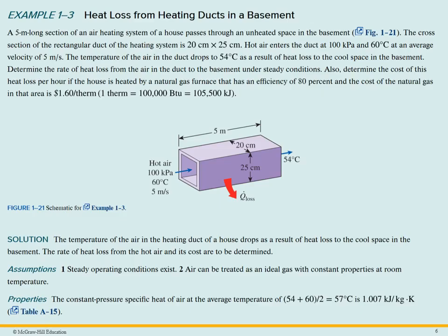Let's take a look at example 1.3. Here we have heat loss from a duct. So we have a five meter long section of air heating system. It's 20 centimeters wide and 25 centimeters deep. We have hot air coming in at a hundred kilopascals at 60 degrees C, five meters per second coming in and going out at 54 degrees C. So it's heat loss, right? It comes in hotter than it goes out.